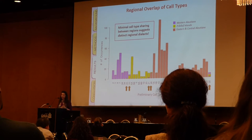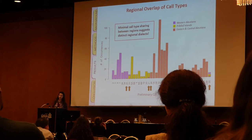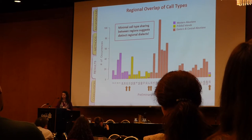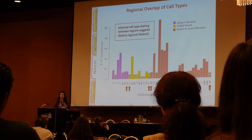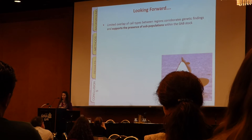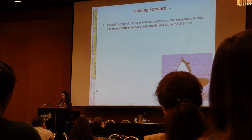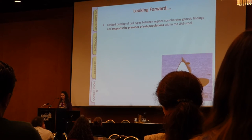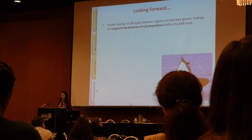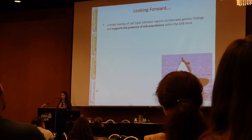Minimal call type sharing between these regions really suggests that each region has its own dialect. The limited overlap of call types between regions corroborates the genetic findings of Parsons et al. and supports the idea that there are likely a number of subpopulations within the GAB stock.